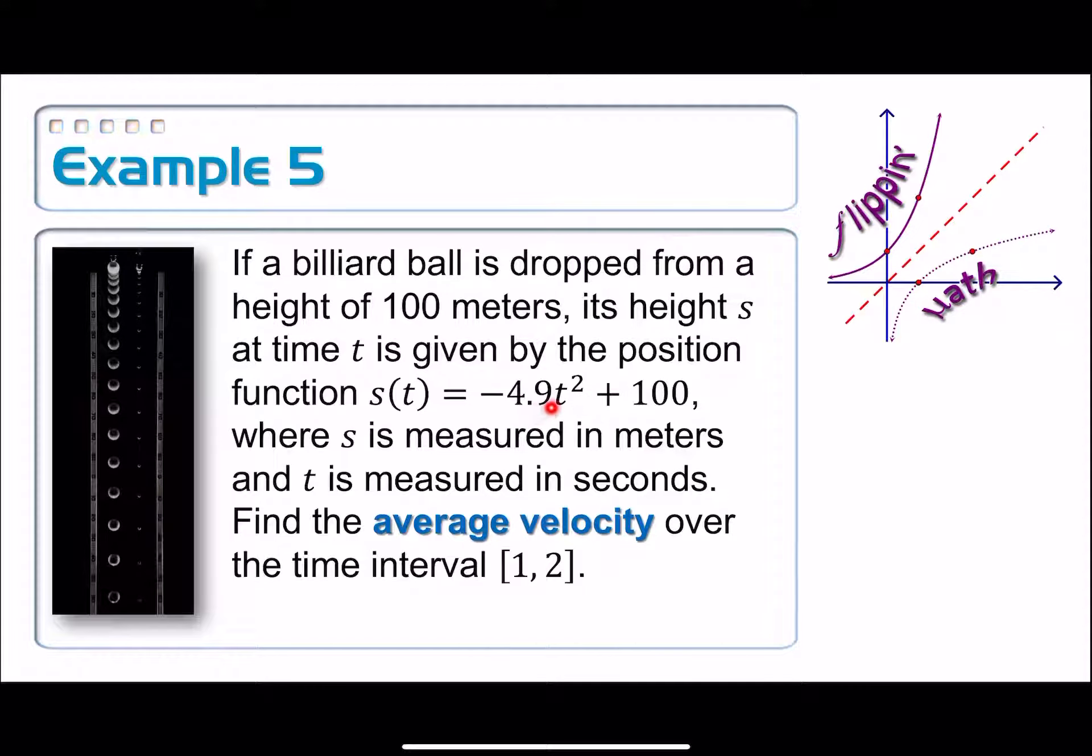And then this negative 4.9, do you know what this is? This is half of the acceleration due to gravity. It's negative because we're talking about going downwards, and the acceleration due to gravity is 9.8 meters per second squared. And this is half of that thing. And we're going to see where that stuff comes from after we learn quite a bit more calculus.